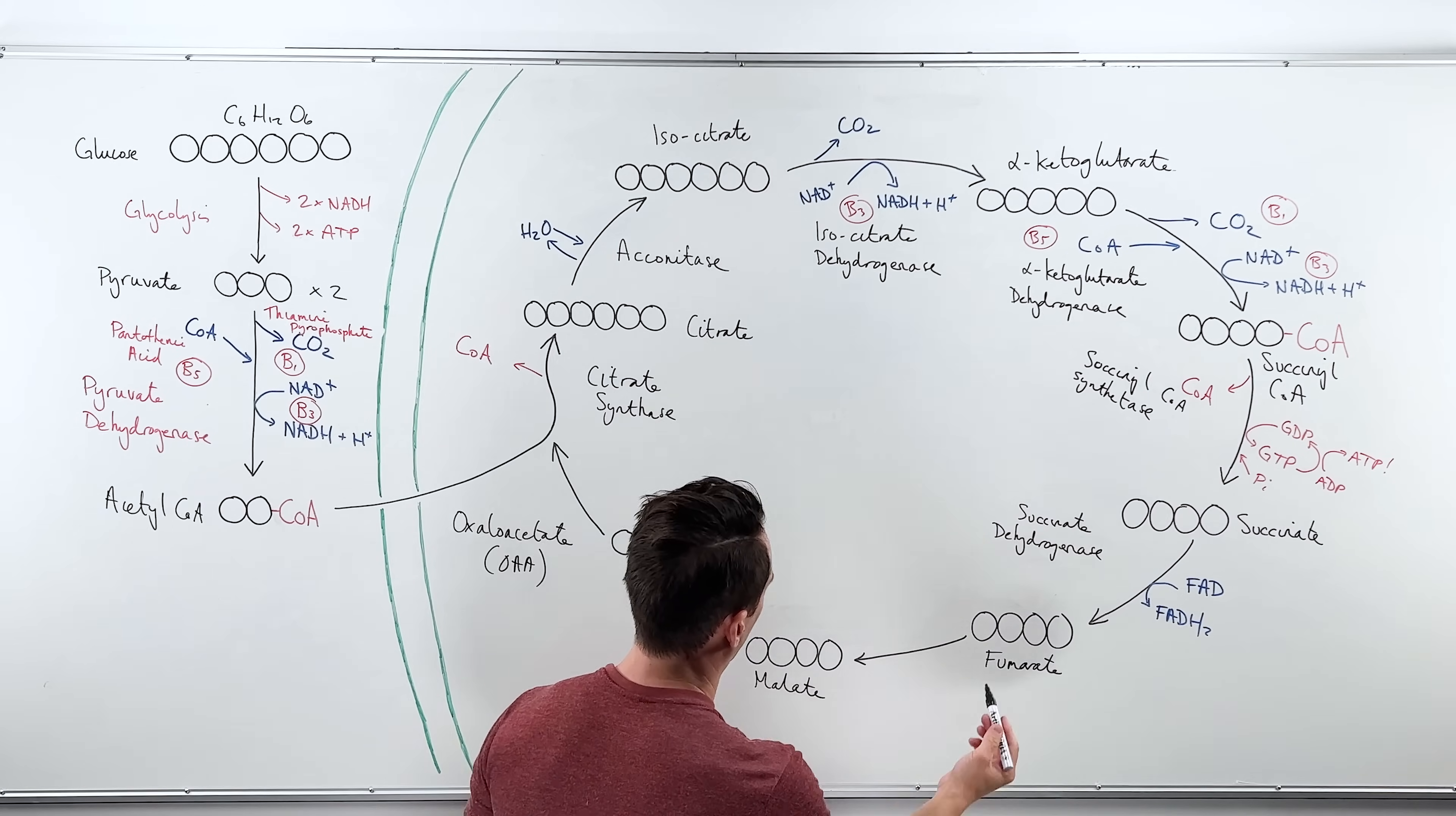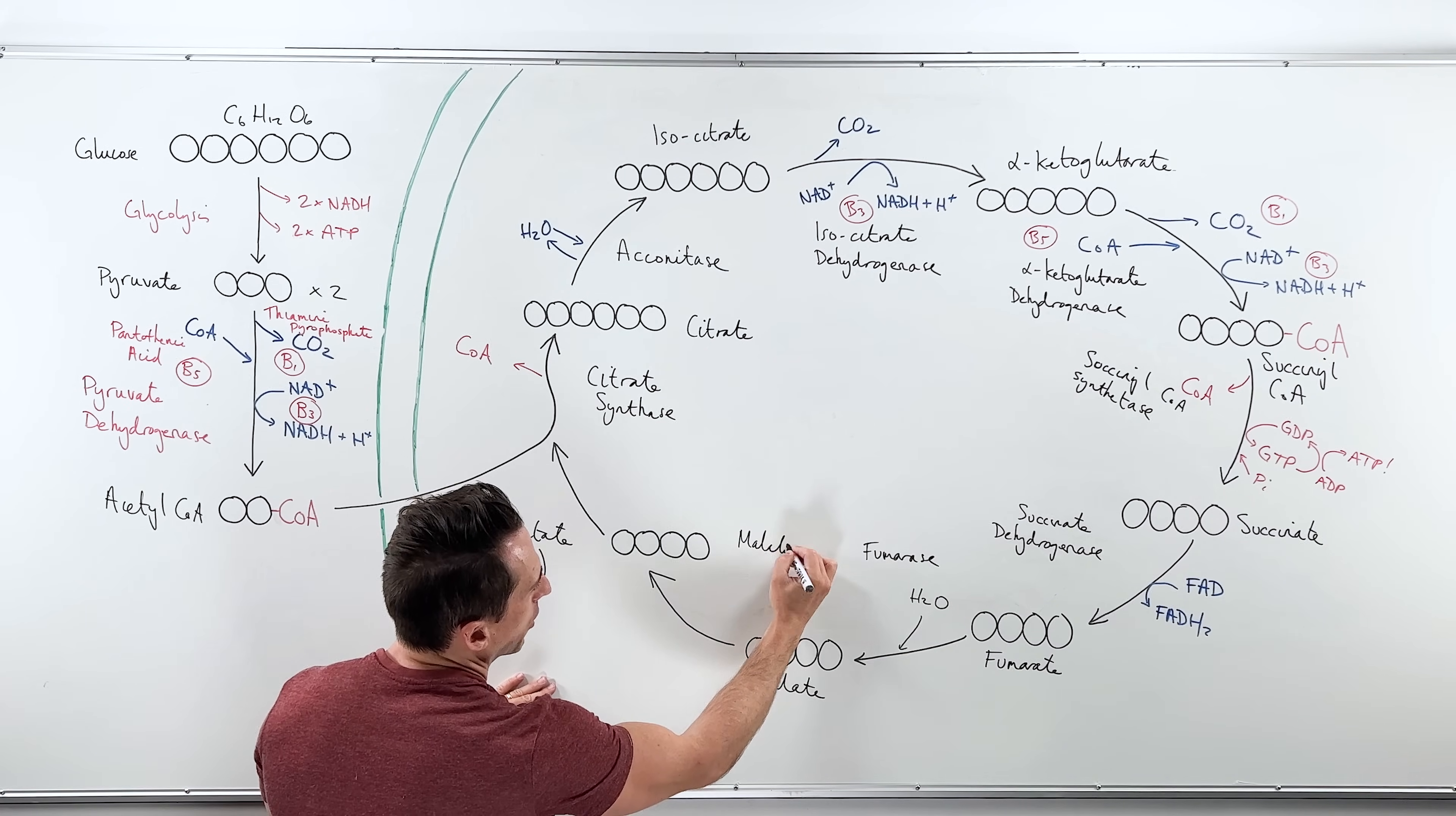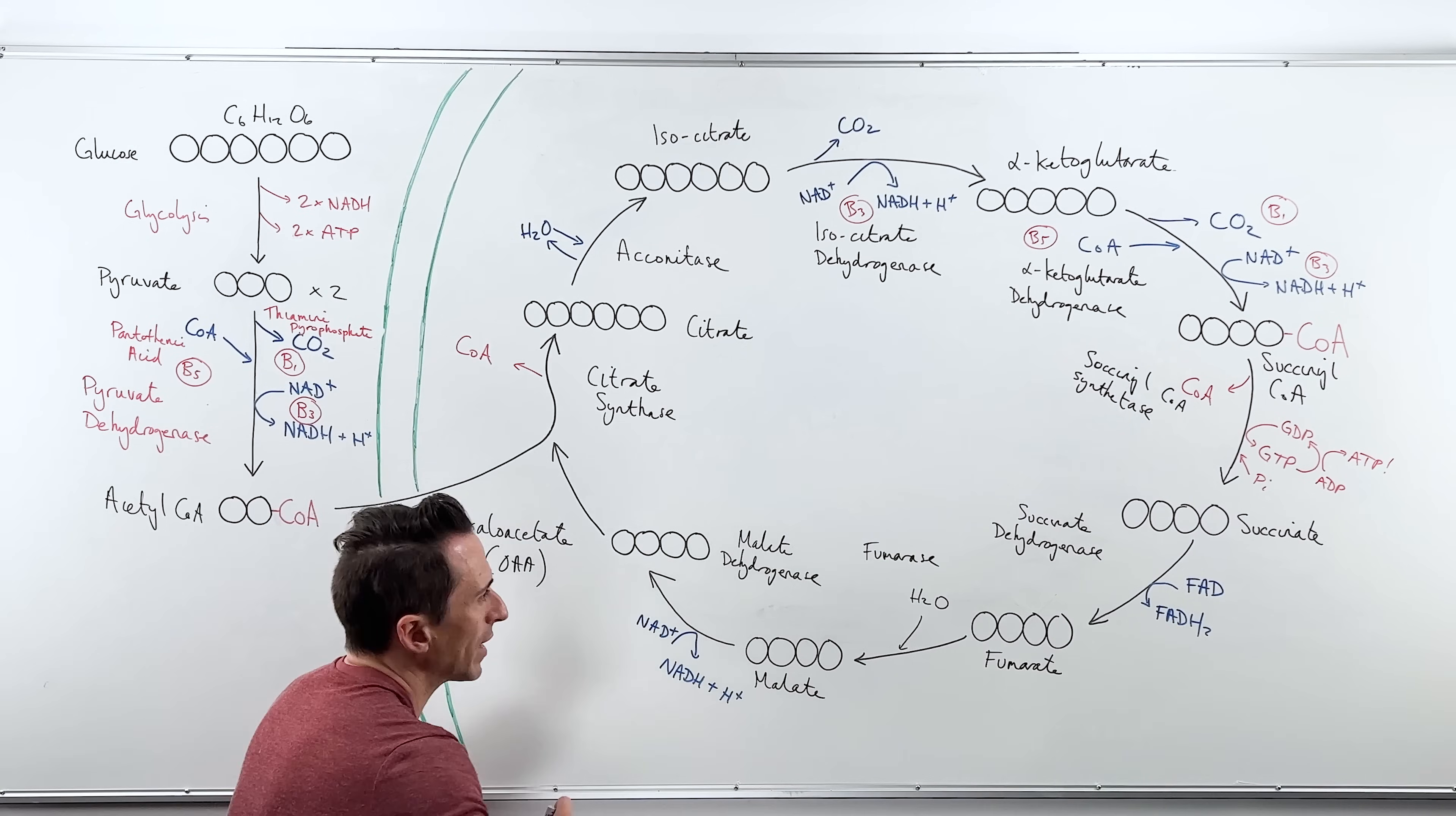Now we've got fumarate. Fumarate turns into malate using an enzyme called fumarase. And in doing so, it adds a little bit of water. Now to go from malate to oxaloacetate, we use an enzyme called malate dehydrogenase. Dehydrogenase tells you it's either going to use NAD+, or FAD. In this case, it's NAD+, again, forming NADH plus hydrogen ions. And now we're back to the oxaloacetate.